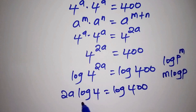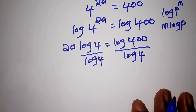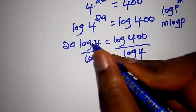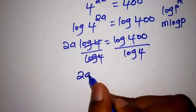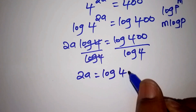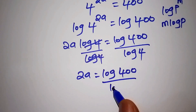From here, we shall divide both sides by the log of 4. The log of 4 terms cancel, so now 2A is equals to the log of 400 all over the log of 4.